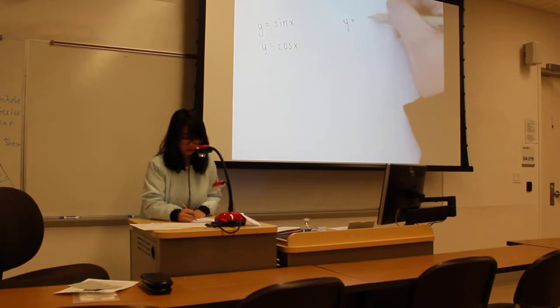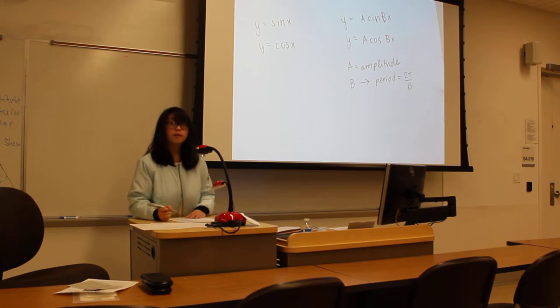That's how you graph the two plots. I want to introduce the form y equals a sine bx and y equals a cosine bx, where a is equal to amplitude and b helps you to find the period. And what the period equals is 2 pi over b.